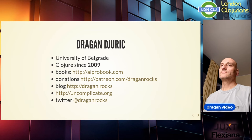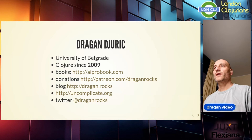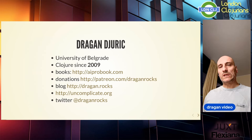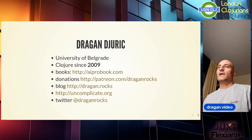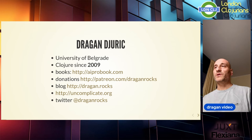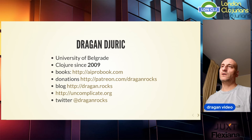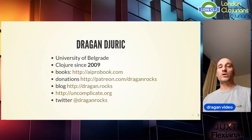You can send donations that support my work at Patreon at dragonrocks. I write a blog mostly related to Clojure and other related technologies, accessible at dragonrocks — the blog is free. I've also developed some libraries written mostly in Clojure at uncomplicate.org and on GitHub at github.com/uncomplicate. My Twitter handle is dragonrocks.